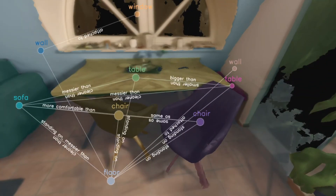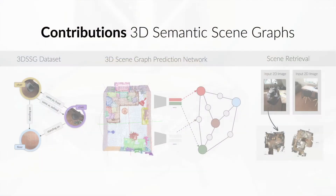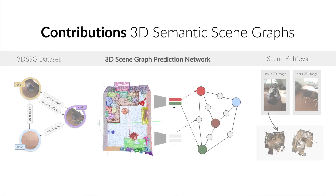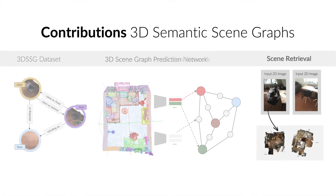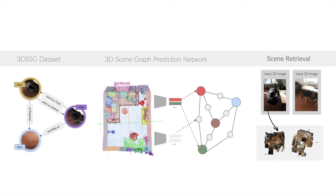To summarize our contributions: we introduce 3D-SSG, we propose the first learned method to predict a 3D semantic scene graph, and we also show the application of graphs in a cross-domain retrieval task.